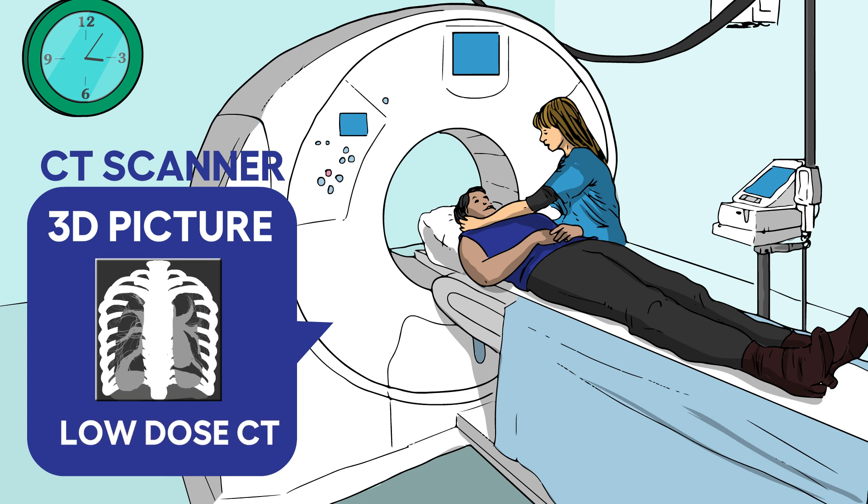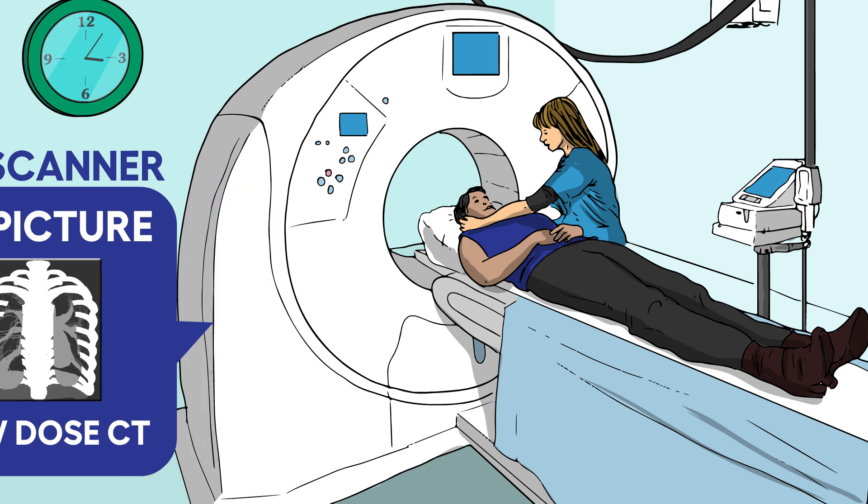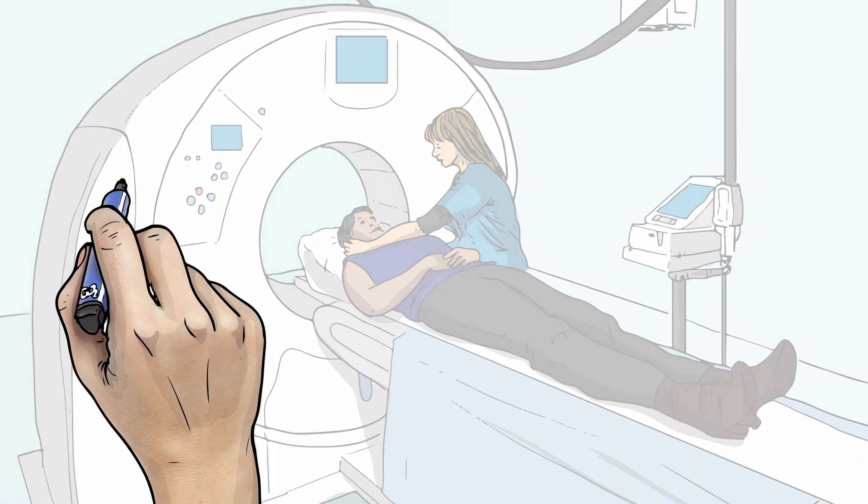Here's how it works. A machine called a CT scanner takes 3D x-ray pictures of your lungs using a small amount of radiation, also called low-dose CT. This level of radiation is a little more than a chest x-ray, but is much lower than other types of CT scans.